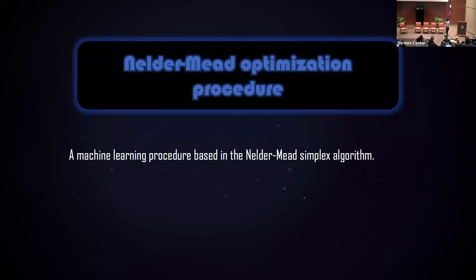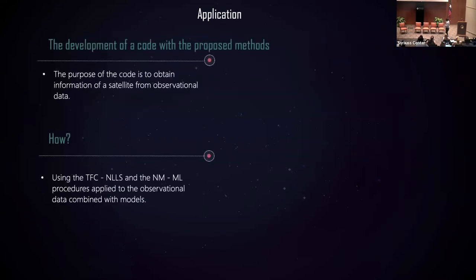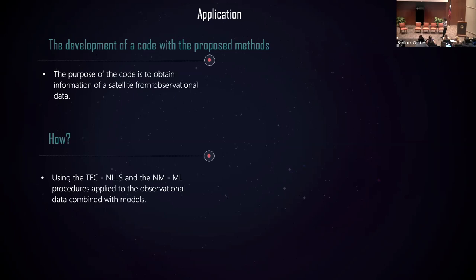We apply this to obtain some properties of the motion. In the application of this, we propose the development of a code whose purpose is to obtain information about a satellite from observational data, using both proposed methods: the Theory of Functional Connections combined with the nonlinear least squares method, and the Nelder-Mead method with machine learning procedures.